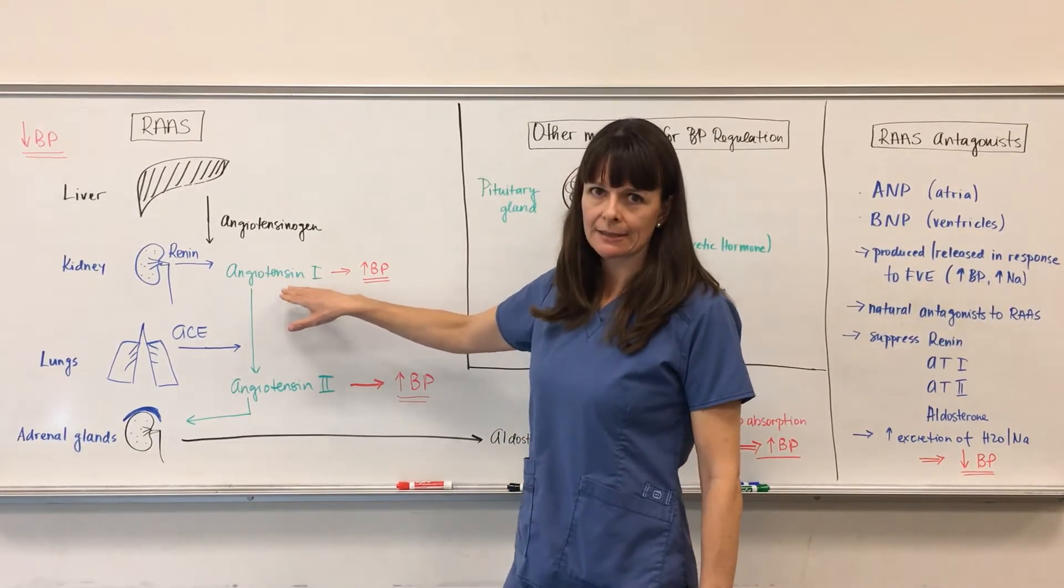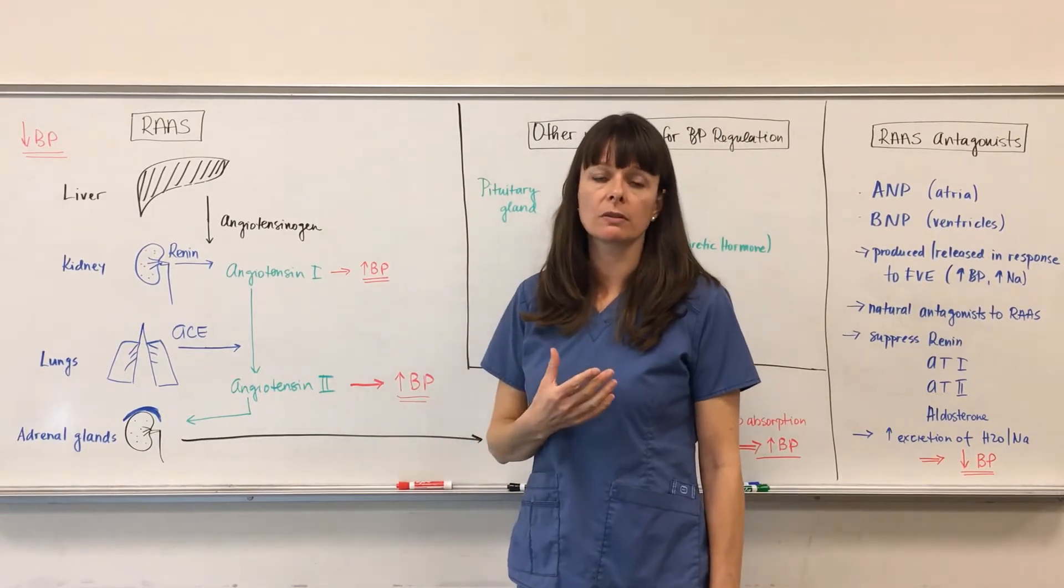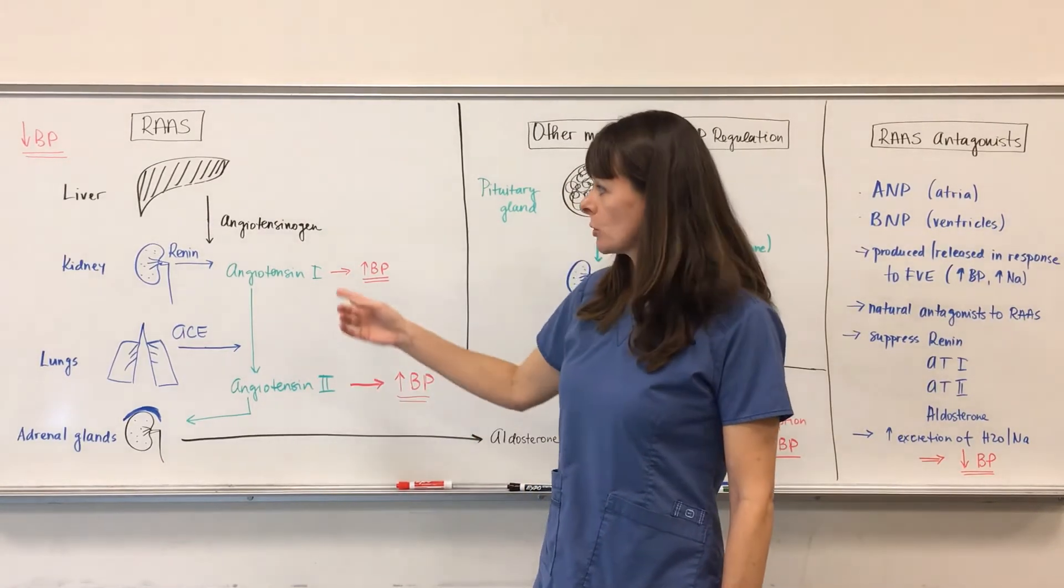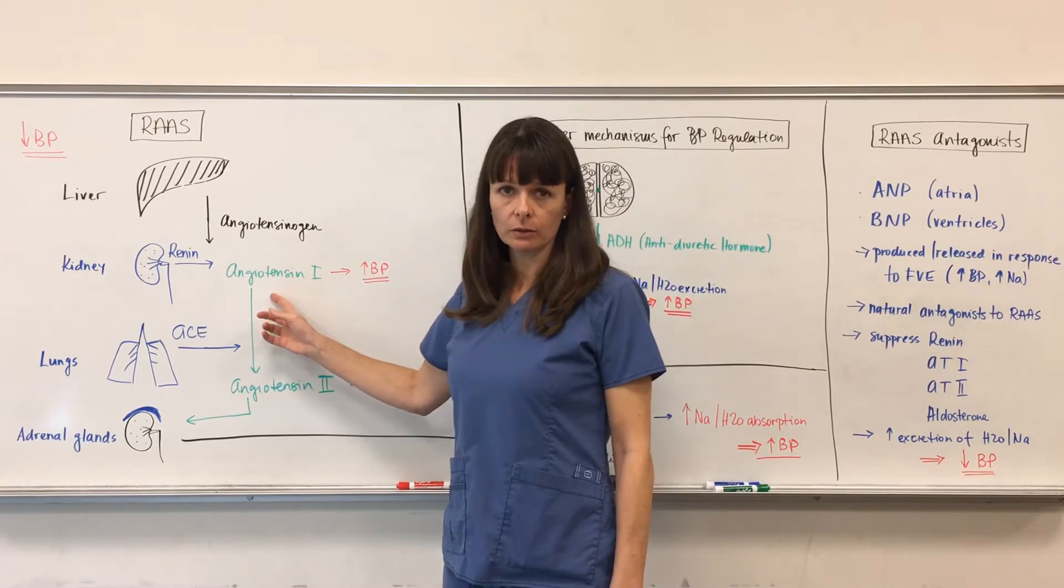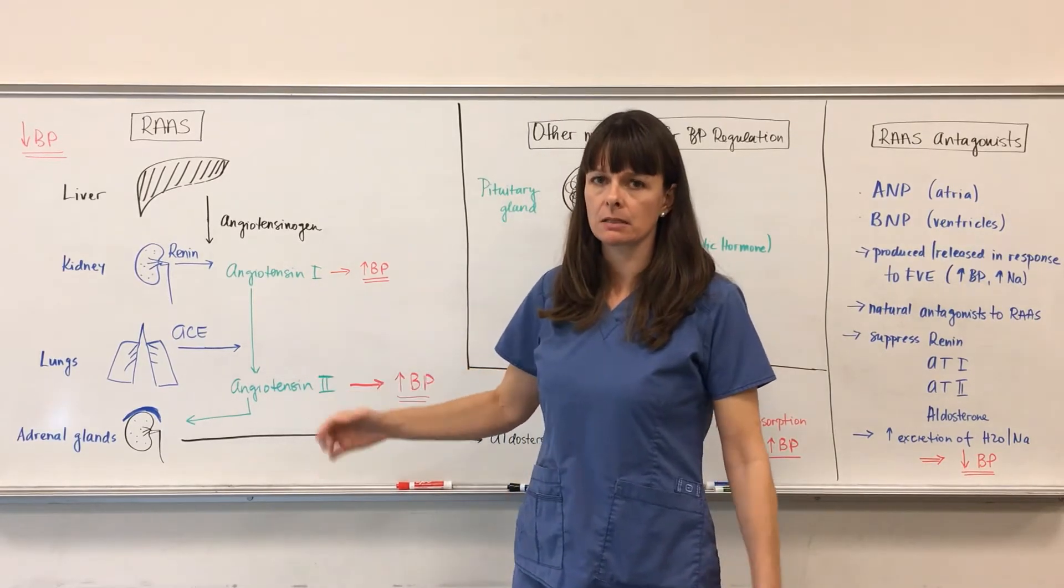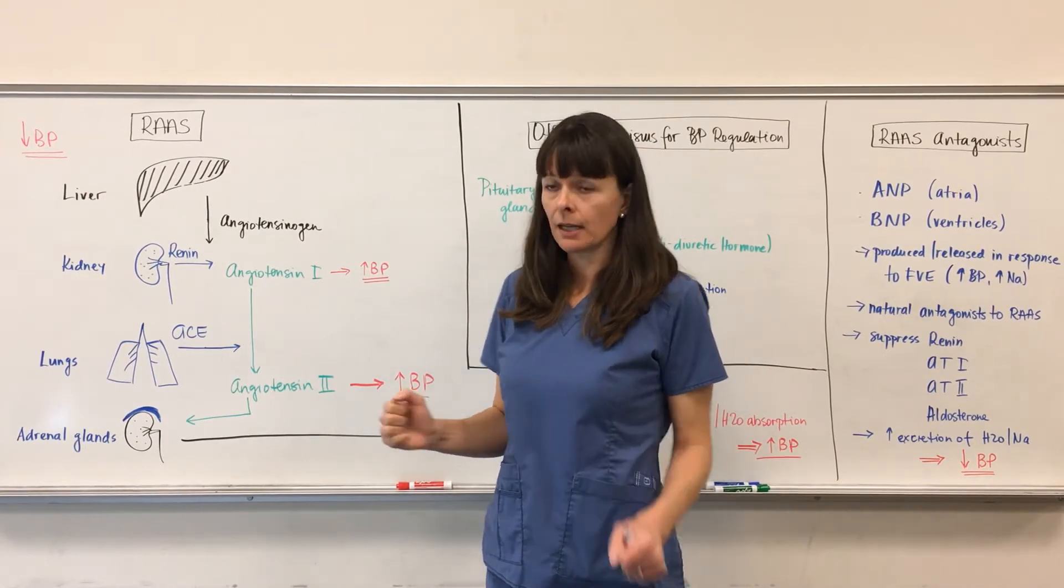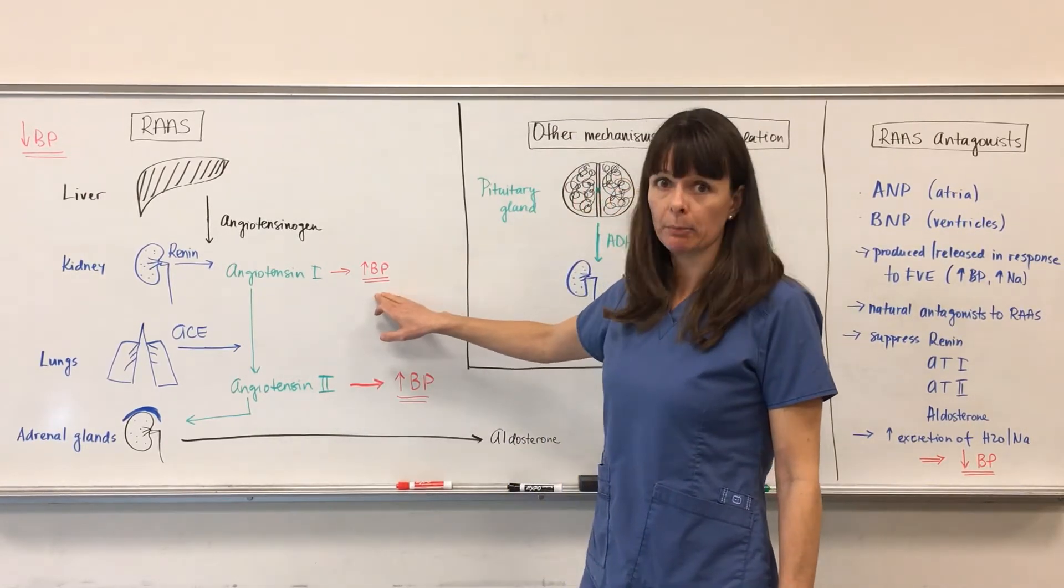Think about angiotensin - a lot of the words that we use in physiology are very intuitive. Angio meaning blood vessel, tensin meaning tense. So it causes vasoconstriction. If the blood vessel gets really tight, it will cause an increase in blood pressure.